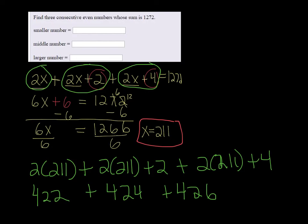And we better check it. If we add that all together, 422 plus 424 plus 426, it better equal 1272 and it does. So up in your answer blank, you want to put 422 here, 424 and 426.